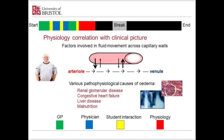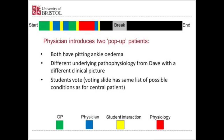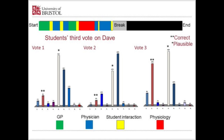The physician then introduces two pop-up patients who both have pitting ankle oedema but for a very different underlying pathophysiology from Dave. Students are given the clinical scenarios and vote for those patients on the same voting slide. We then go back to Dave for a third vote, and with quite a lot of additional information and the ability to compare Dave's picture with two other patients, more than 70% of students are now making either the correct or a very plausible diagnosis.